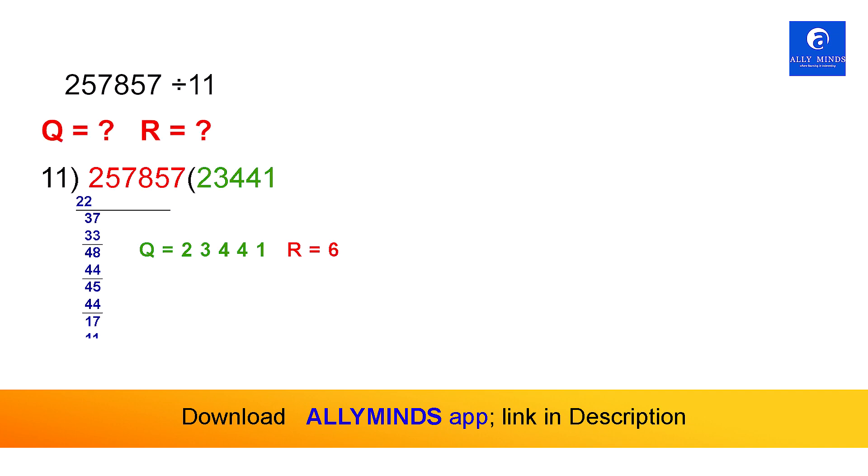Here we have division by 11. We need to find the quotient and remainder. In the school method there are many steps, but in Vedic Mathematics we work with the same number 257857 divided by 11.